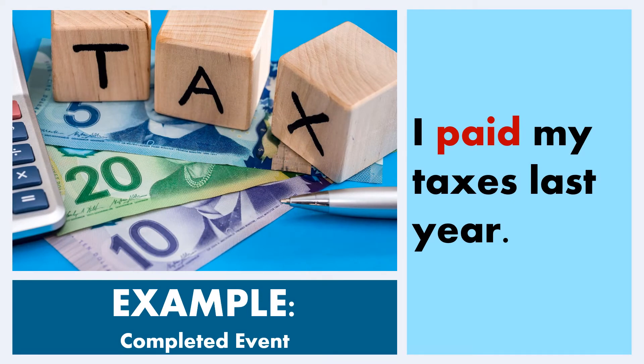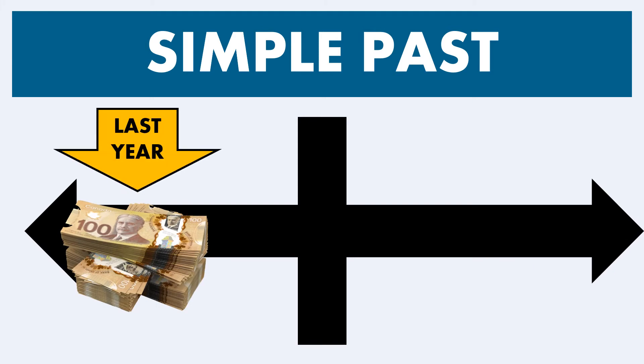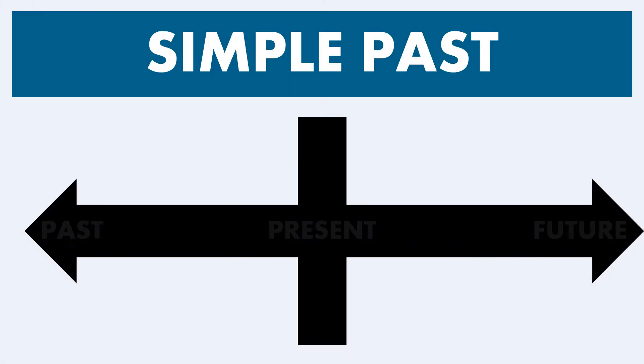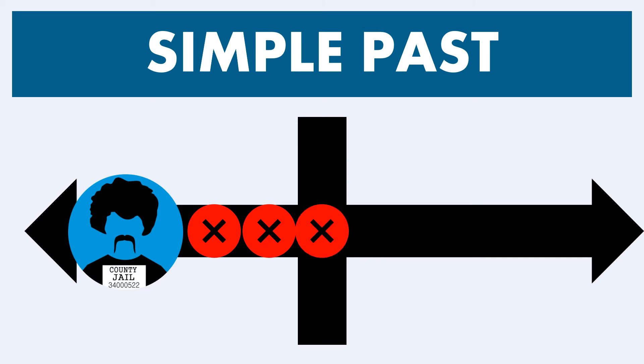For example: 'I paid my taxes last year.' Looking at the timeline, we see in the past we paid the taxes. Now, what if it's an event that's no longer applicable? 'I paid my taxes once.' It means you did it once but haven't done it since — hence you're in county jail because the government wants its money. The past tense can also refer to something that was done in the past but is not applicable in the future, which can actually create some confusion.